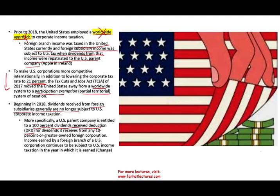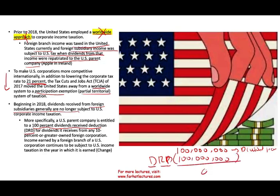Specifically, a US parent company is entitled to a 100% dividend received deduction (DRD) for dividends received from any 10% or more owned foreign subsidiary. So if Apple, for example, sends $100 million in dividends to the US, that income is recognized as taxable, but then the government allows a DRD of $100 million — effectively meaning the company pays no tax on that dividend income. This was a huge change.